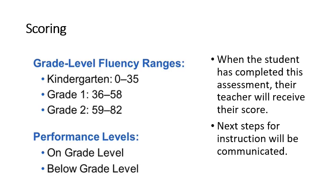When the student has completed this assessment, their teacher will receive their score. Grade level fluency ranges for scores are: for kindergarten 0–35, grade 1 36–58, and grade 2 59–82. Your child's teacher might also designate a performance level, either on grade level or below grade level.